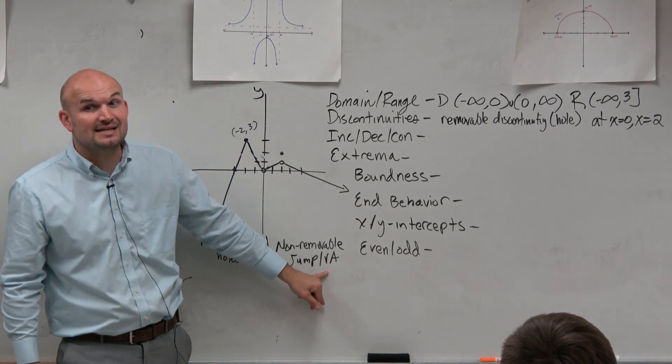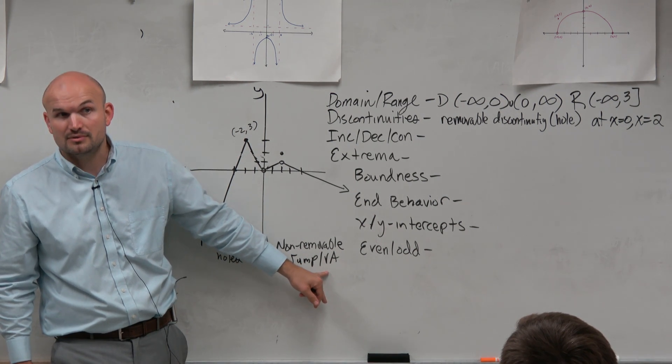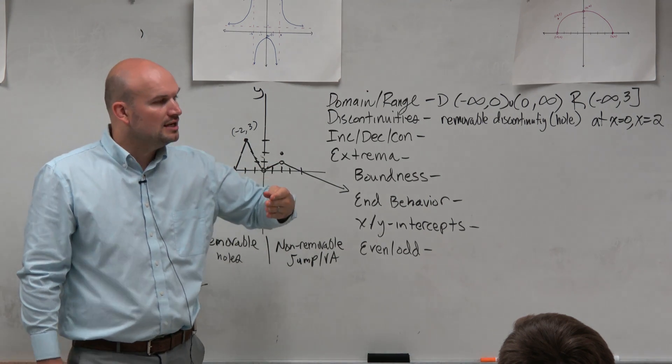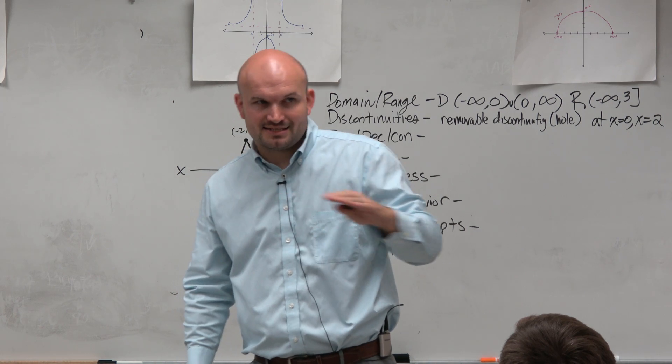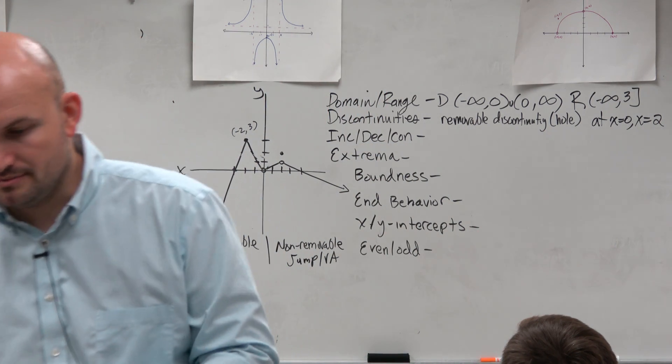And remember, notice I said vertical asymptotes, not horizontal asymptote, all right? Vertical asymptotes are your discontinuities of your graph, where horizontal asymptotes are not a discontinuity of the domain in their respect, all right?